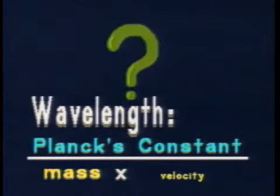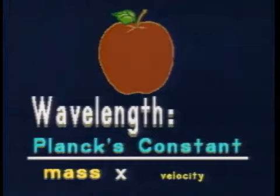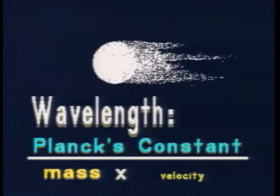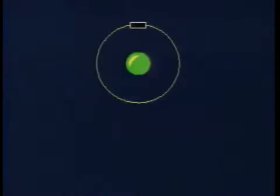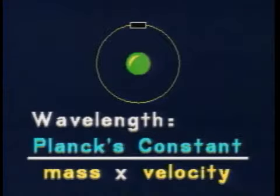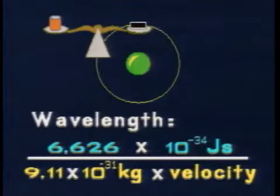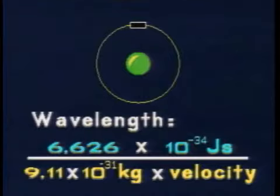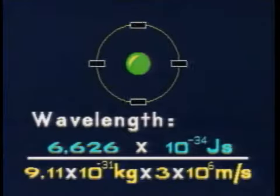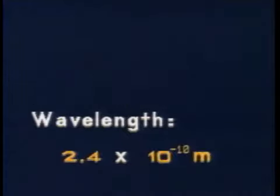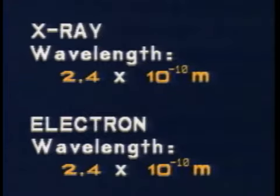What kind of particle might have a de Broglie wavelength large enough to observe wave effects like diffraction and interference? Consider one of the smallest particles: an electron. What might its de Broglie wavelength be if its mass is 9.1 × 10⁻³¹ kilograms and it travels at 3 × 10⁶ meters per second? Although this wavelength seems small, it's no smaller than that of an X-ray. We can demonstrate the wave nature of X-rays by using, of all things, a crystal of salt.